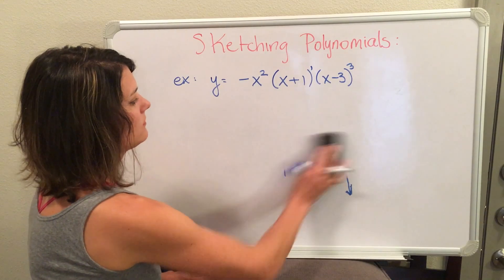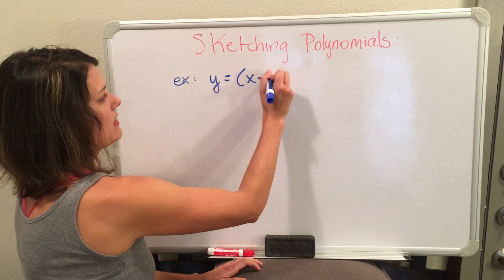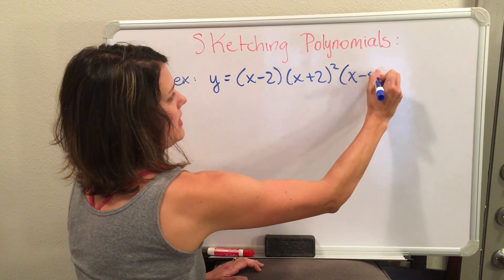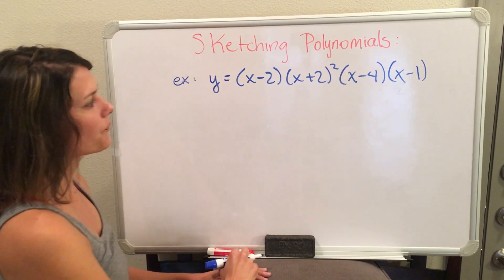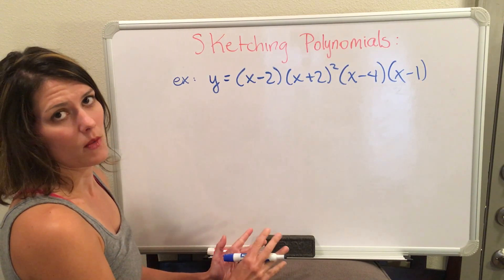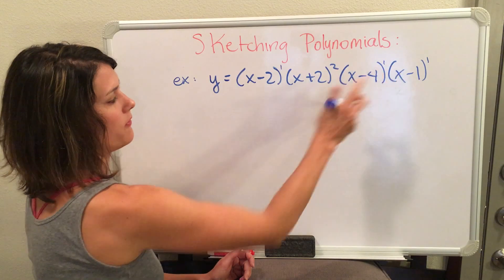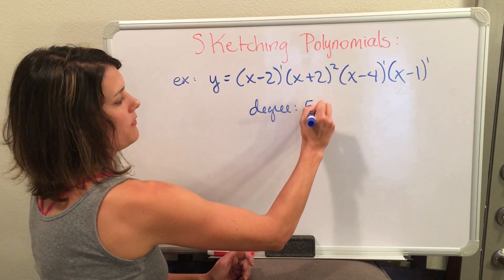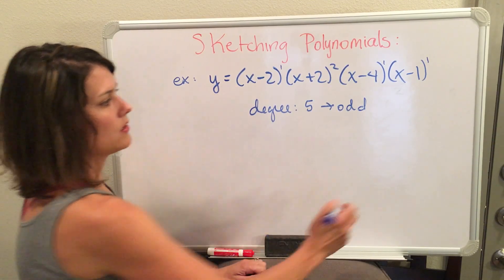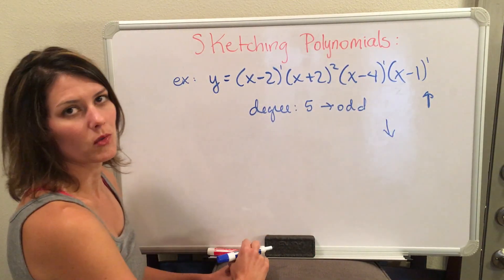I'm going to do one more example. Let's look at the polynomial: (x minus 2), (x plus 2) squared, (x minus 4), and (x minus 1). This is already in factored form. To find my degree I add all my exponents: one plus two plus one plus one equals five. My degree is five, which is odd. I'm leading with a positive coefficient, so my graph will have end behavior where it starts going down towards negative infinity but ends up going towards positive infinity.